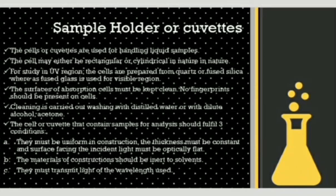The sample holder or cuvettes are used for handling liquid samples. Cells may be rectangular or cylindrical. For the UV region, cells are prepared from quartz or fused silica, whereas fused glass is used for the visible region. The surfaces of absorption cells must be kept clean with no fingerprints, and cleaning is carried out by washing with distilled water or dilute alcohol acetone. Cuvettes must fulfill three conditions: uniform construction, constant thickness with optically flat surfaces facing the incident light, and materials inert to solvents that transmit light of the required wavelength.